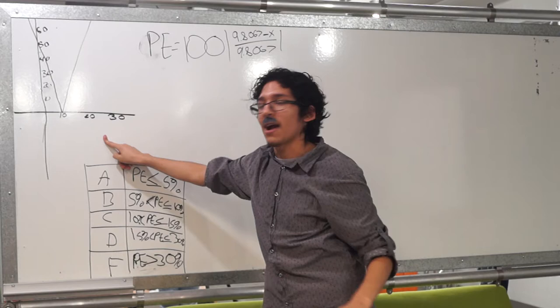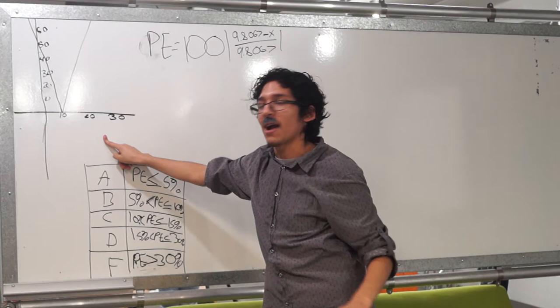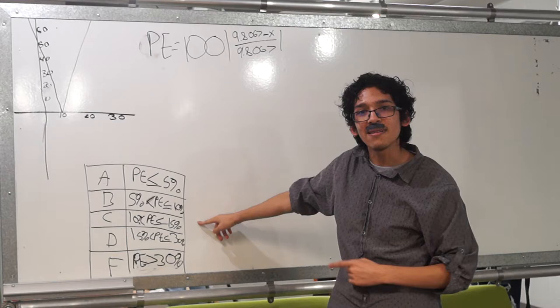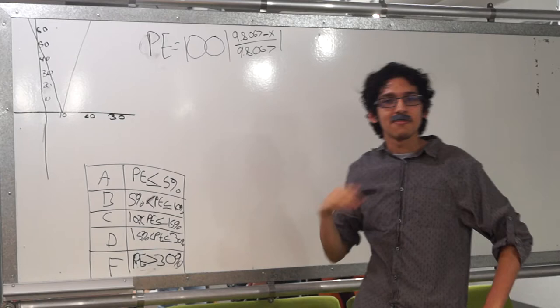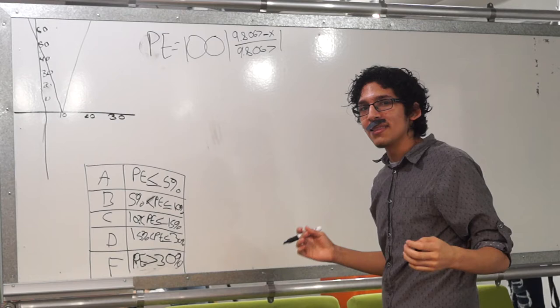This right here is the chart that shows what grade a student would get based on the percentage error. The formula says 100 times the absolute value of 9.8067 minus x, over 9.8067. That's an experimental value. Carolyn Gray got an experimental value of 11.1056. So we'll be writing the equation right here.